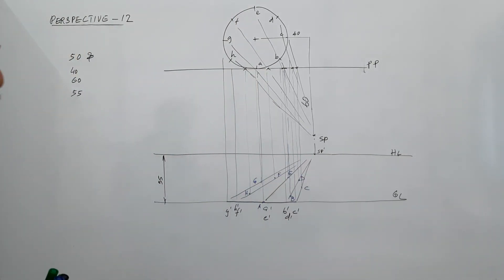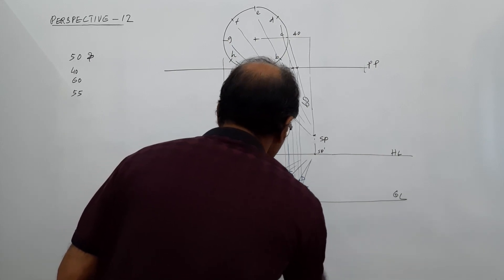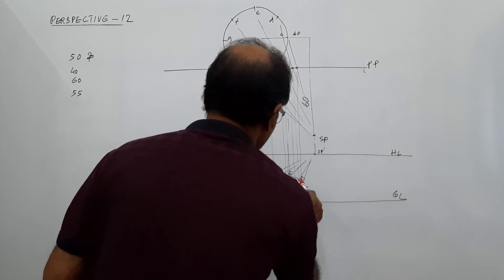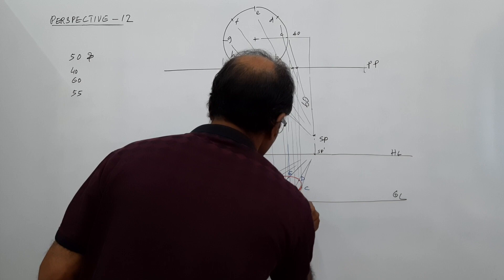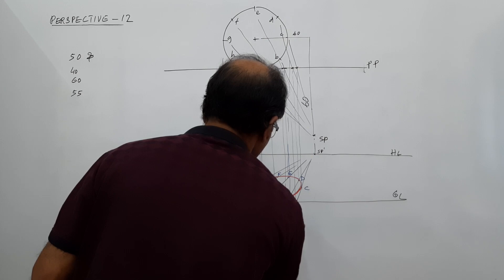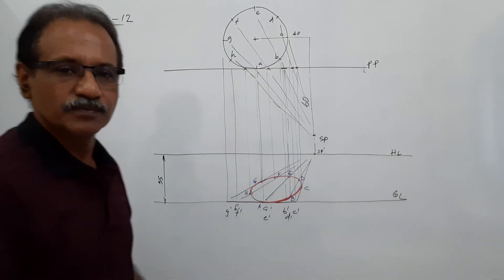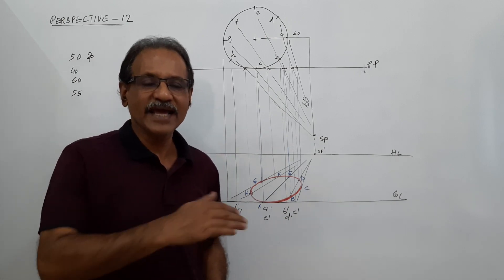Connect all these points by a smooth curve. You get an ellipse. This is the perspective view of the circular lamina lying on the ground.